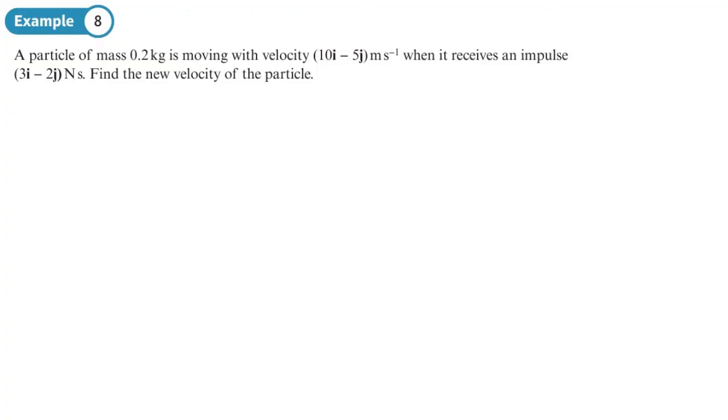So a particle of mass 0.2 kg, moving with velocity 10i minus 5j, receives an impulse of 3i minus 2j. Find the new velocity. We still use the impulse formula here, but we're going to have some vectors. Our impulse is 3i minus 2j. It may be easier to use the factorized form of the formula.